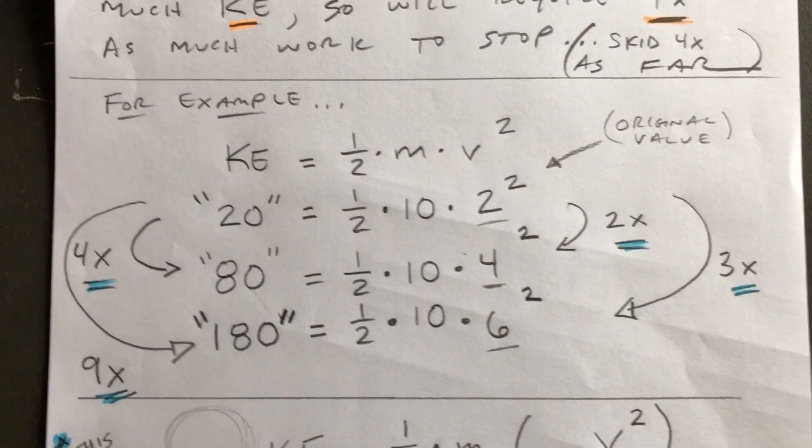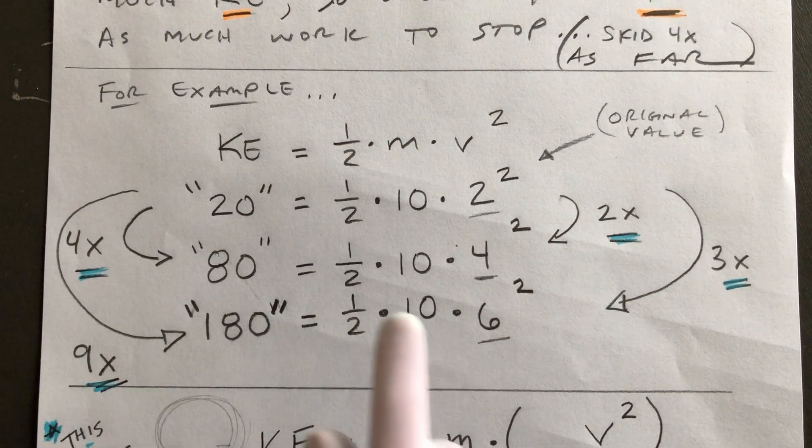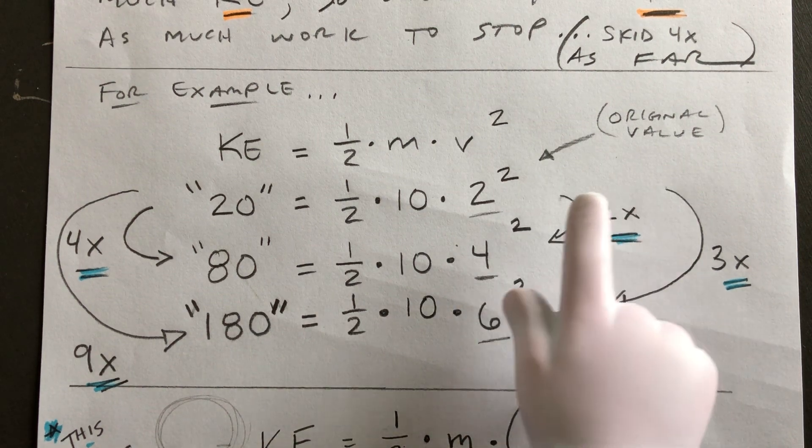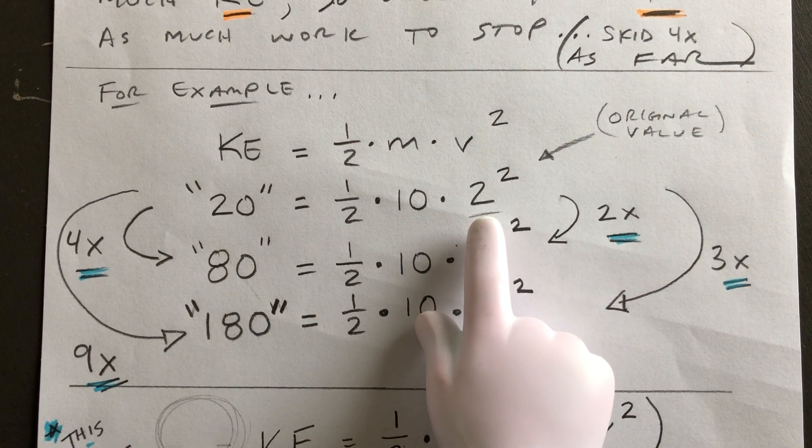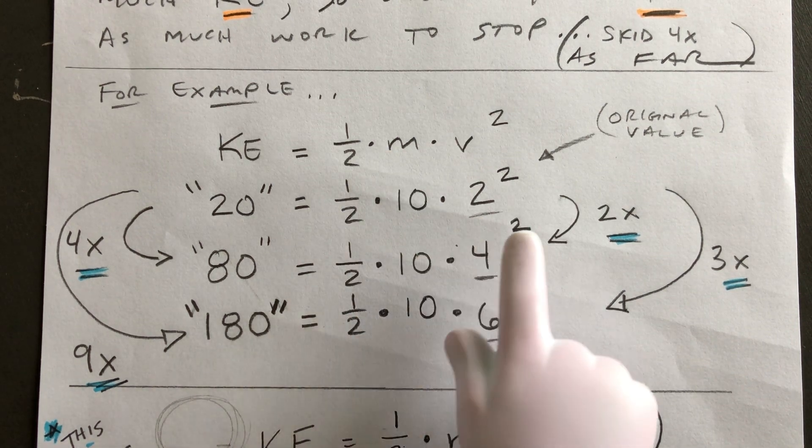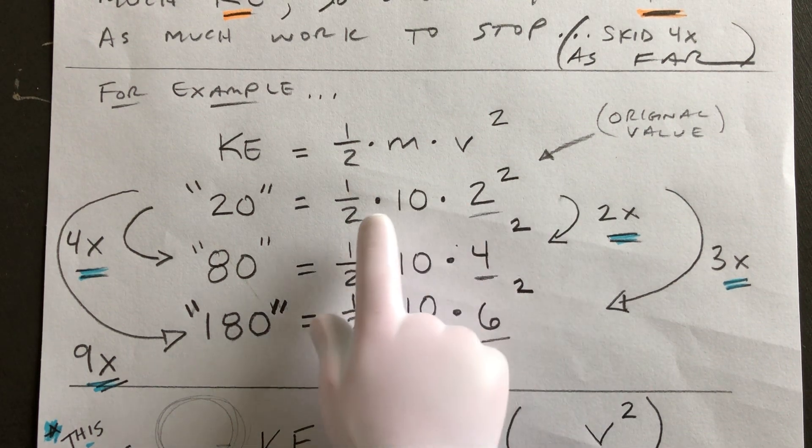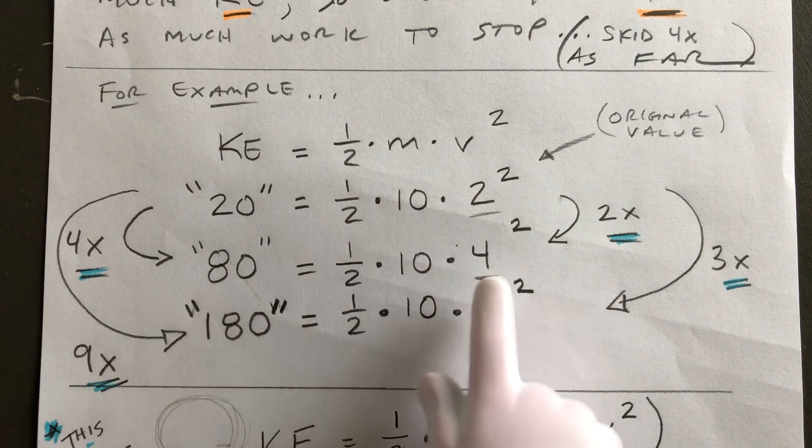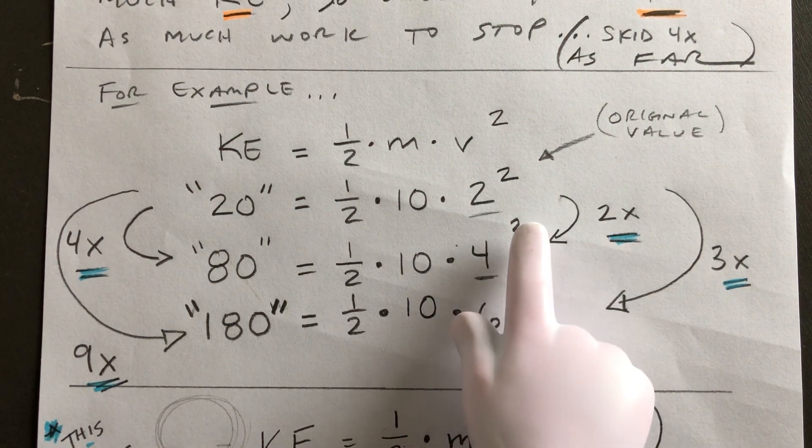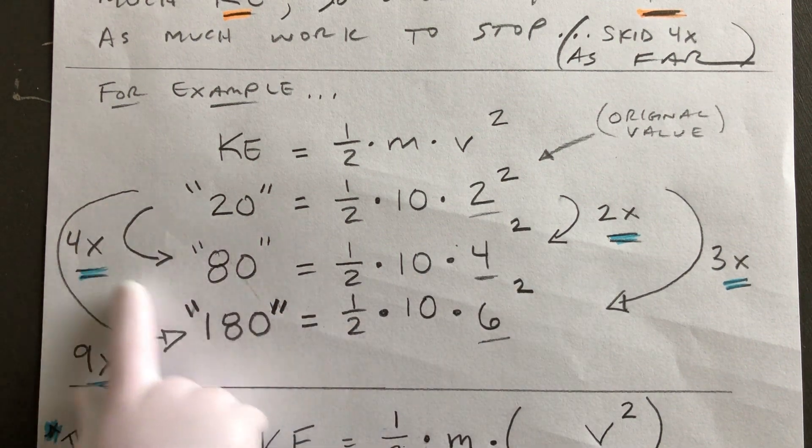With kinetic energy, for example, I do have to give you an original value just like I did in the skidding distance problem. So let's say that velocity was 2 and the mass of the object was 10, just to keep easy numbers. Well as you can see, 2 squared, 2 times 2 is 4, times 10 is 40, take half is 20. But if you double the speed, 2 to 4, 4 times 4 is 16, times 10 is 160, take half is 80. You have just made your kinetic energy four times as much.